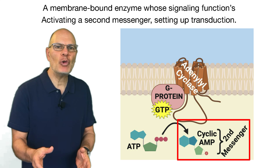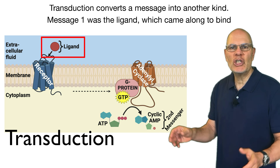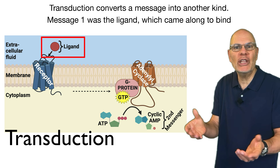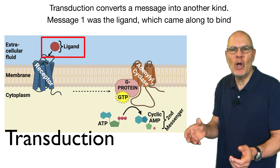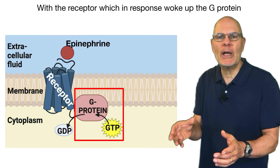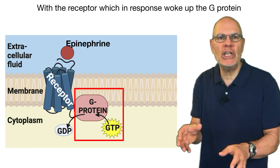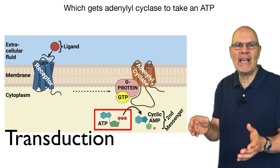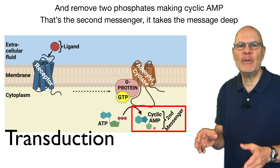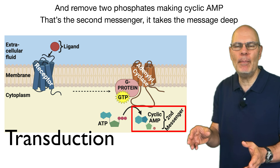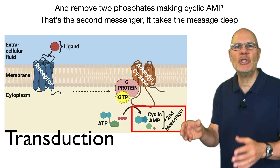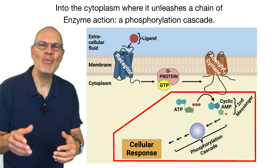Then the G-protein drifts in the membrane space until it bumps into adenylyl cyclase — a membrane-bound enzyme with signaling functions — activating a second messenger and setting up transduction. Transduction converts a message into another kind: message one was a ligand which came along to bind with the receptor, which in response woke up the G-protein, which gets adenylyl cyclase to take an ATP.